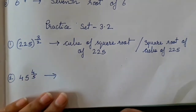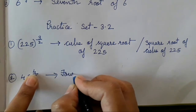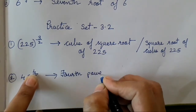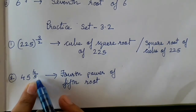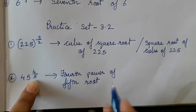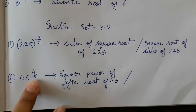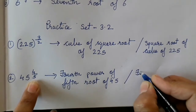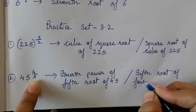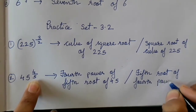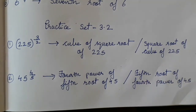For 45 raised to 4 upon 5: the power of the root is the fourth power of the fifth root of 45. Then the root of the power — just reverse it — is the fifth root of the fourth power of 45.